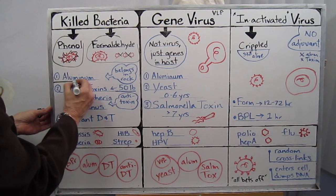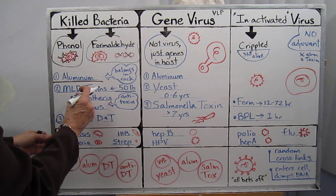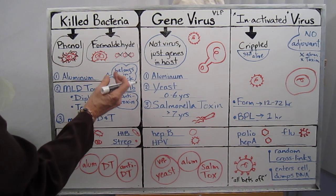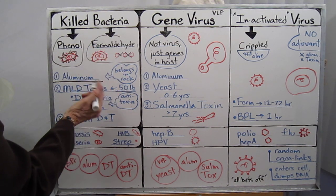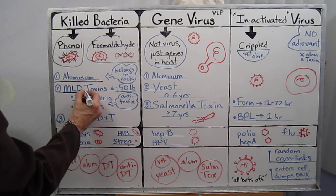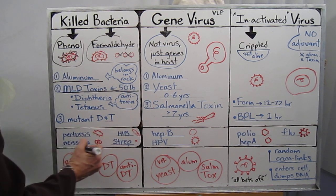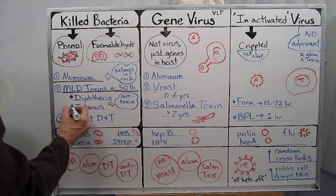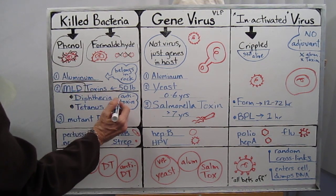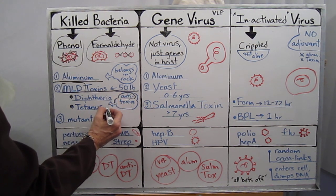The main adjuvant they use in all of them is aluminum, which belongs in rock and is far more powerful than you realize in its effect on our systems. Then they add the toxins. They use the minimum lethal dose — MLD — of these toxins for 50 pounds in children and 100 pounds in adults. They use diphtheria and tetanus toxins, and because they're using the minimum lethal dose for 50 pounds, they have to add the antitoxin for both diphtheria and tetanus.